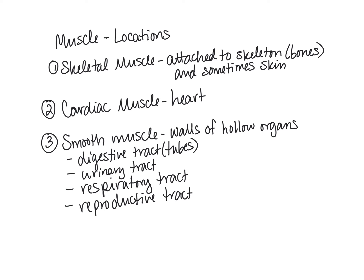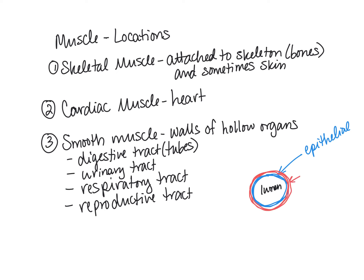If you were to look at a cross-section of these tubes, right up against the lumen — the lumen being the space where food travels through the digestive tract or urine through the urinary tract — you have a layer of epithelial tissue. Then you typically have a layer of connective tissue attached to that. And outside the connective tissue, you have another layer, and that's where you find your smooth muscle.